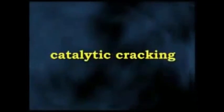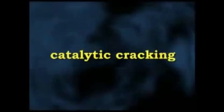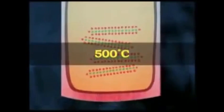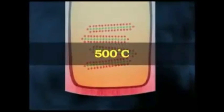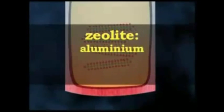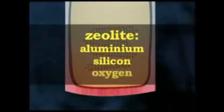The most effective process in creating lighter alkenes is called catalytic cracking. The long carbon bonds are broken by being heated to around 500 degrees Celsius in an oxygen-free environment in the presence of zeolite. This crystalline substance, made of aluminium, silicon and oxygen, acts as a catalyst.